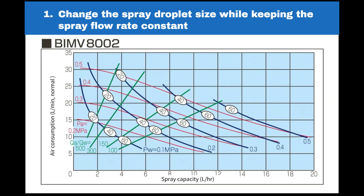We will guide you through two types of adjustments. The first is changing the spray droplet size while maintaining a constant spray flow rate. Starting from an initial point, we adjust to a new point aiming to change the droplet size while keeping the flow rate constant at 4 liters per hour. You can see the spray droplet size is reduced by half from approximately 40 micrometers to 20 micrometers.